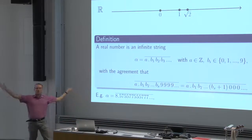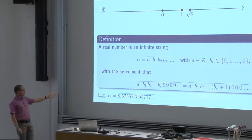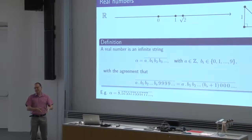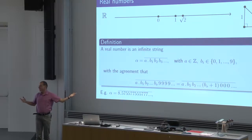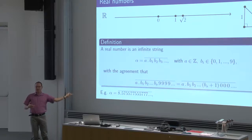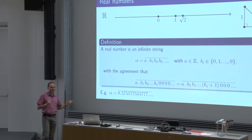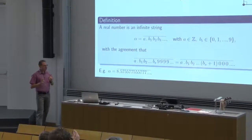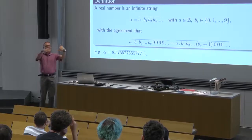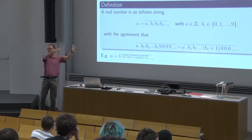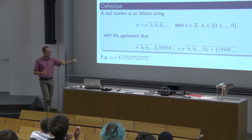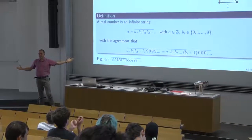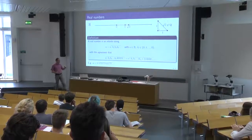For example, you can produce real numbers very easily: 8.57, then 5577, then 3 fives, then 3 sevens, and then continue with the obvious pattern. This number has some pattern in it. Is it rational or irrational? The rational numbers are the ones that are periodic — some sequence gets repeated. Since this number has no repeating sequence, it is irrational. This is an example of an irrational real number.